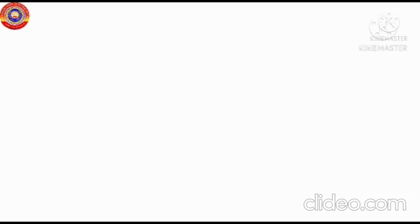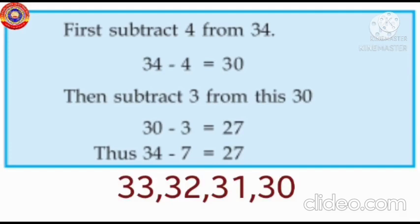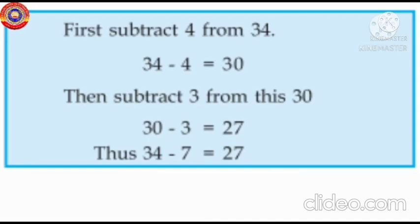Another method. First, subtract 4 from 34. 34 minus 4 is equal to 30. Then subtract 3 from this 30. 30 minus 3, say before 30: 29, 28, 27. Thus, 34 minus 7 is equal to 27. Here we split the number 7 equal to 4 plus 3. I hope you all understood the portions.